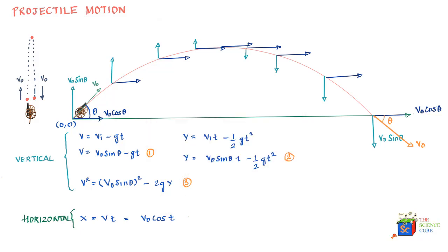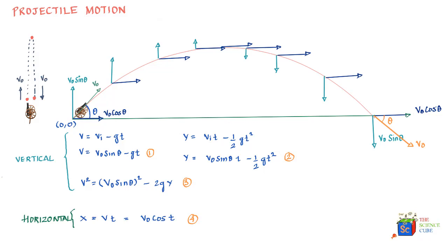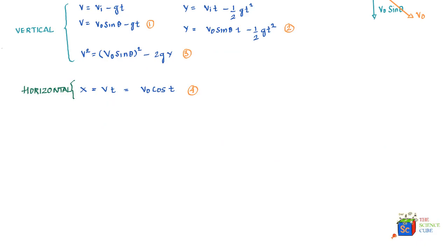With equations 1, 2, 3, and 4, and an understanding of what we've covered, projectile motion becomes very easy. In projectile motion the vertical and horizontal motions are independent of each other — neither affects the other. So when solving problems it is a good idea to deal with vertical and horizontal motion separately.